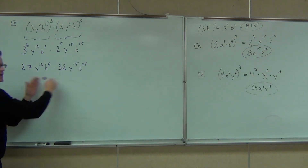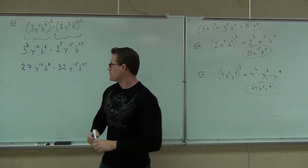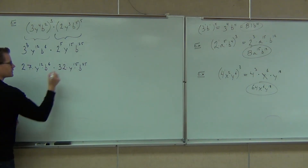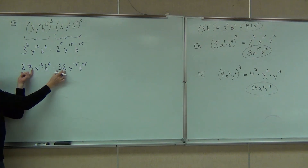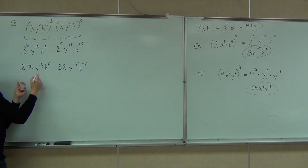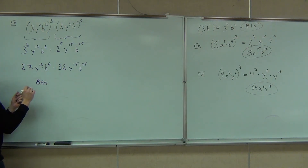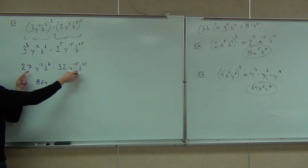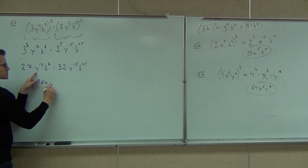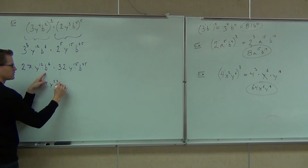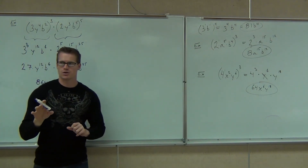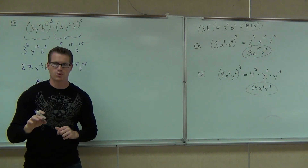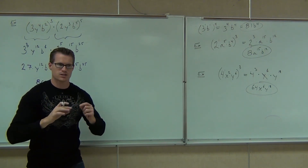These are all being multiplied. We have two numbers: 27 and 32. Multiply those on your calculator — you get 864. Do we have any other common bases being multiplied? Yes — y to the 12th times y to the 15th is y to the 27th. And b to the 6th times b to the 25th is b to the 31st.